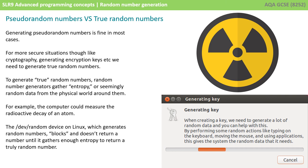One example is a computer could measure the radioactive decay of an atom, turn that into data, and then use that as its method for generating random numbers. The /dev/random device on Linux, which is responsible for generating random numbers, actually blocks the user and doesn't return a random number until it gathers enough entropy. You can see a prompt here on the screen. It's saying generating your key.